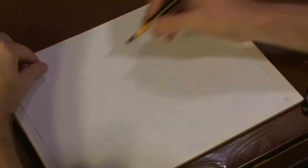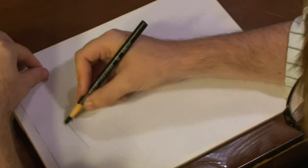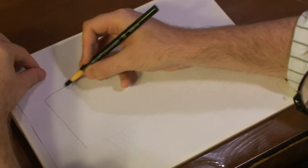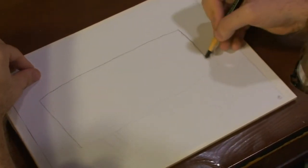Alright guys, to begin drawing our wooden weathered signs, you're going to first draw out a box. Not a very big box, but it's a sign, so it's going to be a very long box.